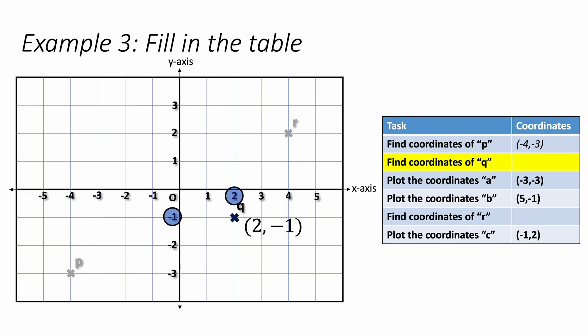Next it's to find the coordinates of Q, which is 2 across and minus 1 down. 2, minus 1, like that. Now it says plot the coordinates of A, which is minus 3, minus 3, which is minus 3 across and minus 3 down, like this.